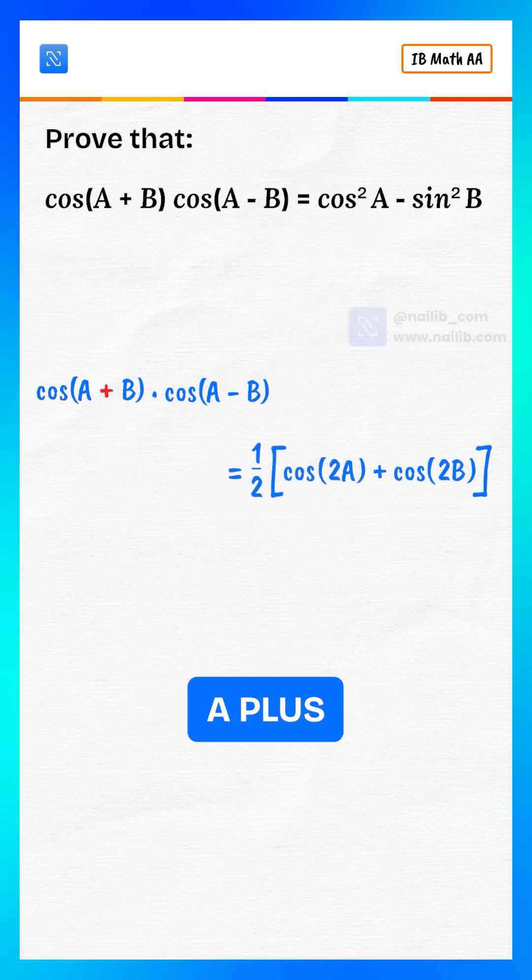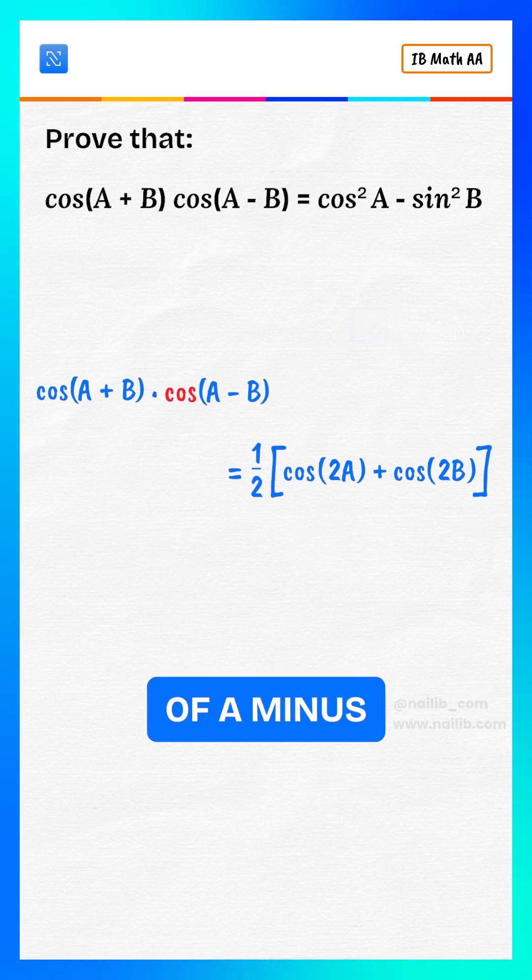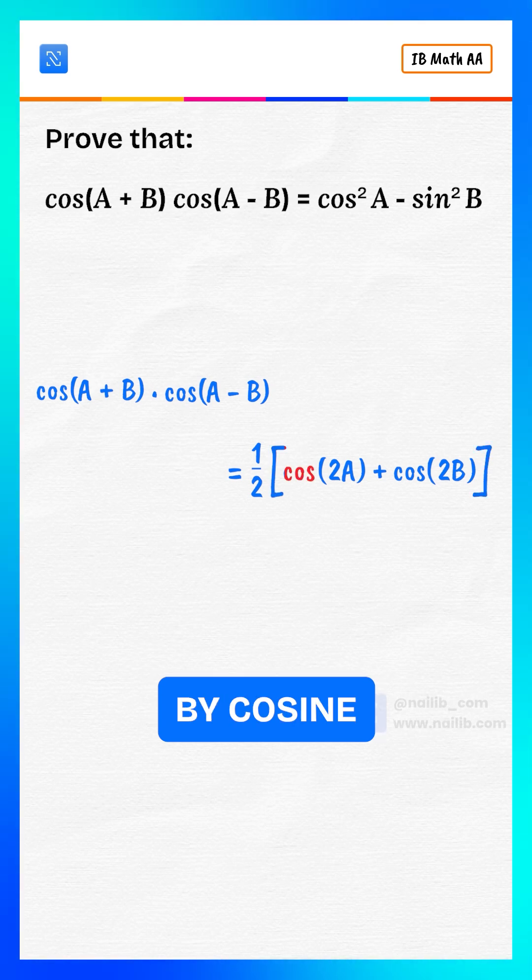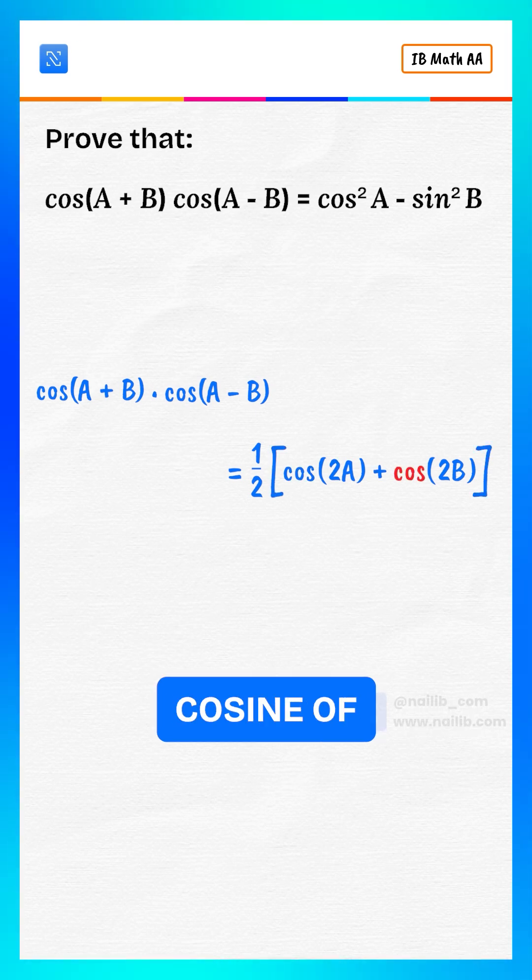Cosine of A plus B multiplied by cosine of A minus B equals one divided by two multiplied by cosine of 2A plus cosine of 2B.